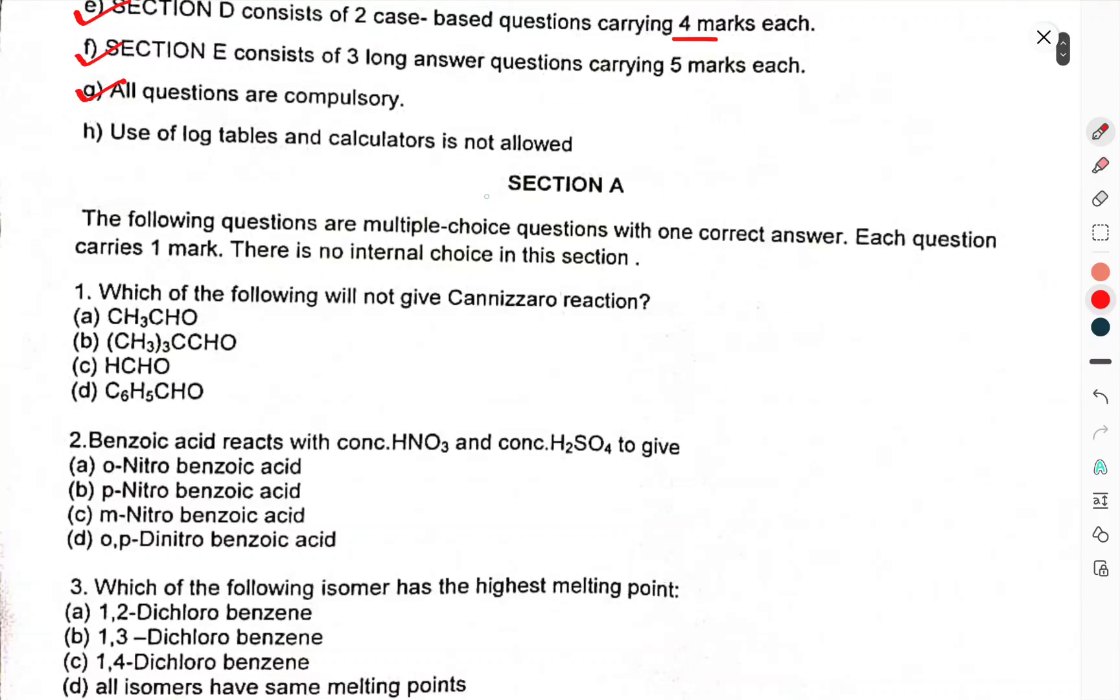Section A: The following questions are multiple choice questions with one correct answer. Each question carries 1 mark. There is no internal choice in this section. Question 1: Which of the following will not give Cannizzaro reaction? You have to choose the correct option. In this paper, we will basically talk about questions and we don't talk about the answers.